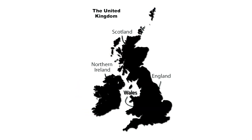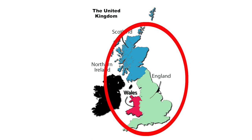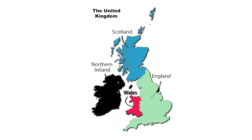To summarize, the United Kingdom is a sovereign state made up of four countries: England, Scotland, Wales, and Northern Ireland. It is important to note that Great Britain and the United Kingdom are often used interchangeably, but actually refer to different things. Great Britain refers only to the island that is home to England, Scotland, and Wales, while the United Kingdom is a political entity that also includes Northern Ireland.